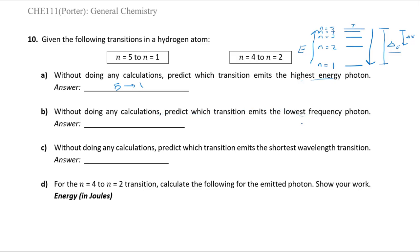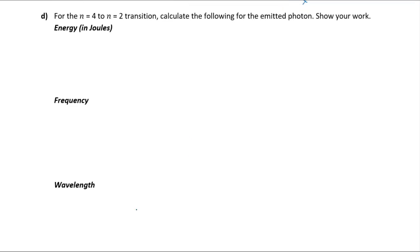Without calculations: the lowest frequency corresponds to the lowest energy transition, which is 4→2, since energy is directly proportional to frequency (E = hν). For shortest wavelength: energy is inversely proportional to wavelength (E = hc/λ), so shortest wavelength means highest energy, which is the 5→1 transition.